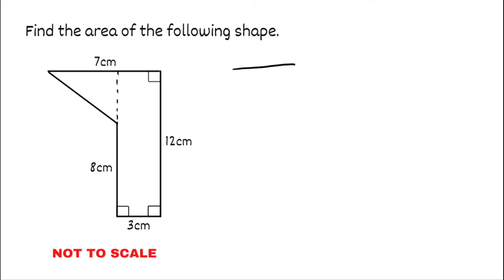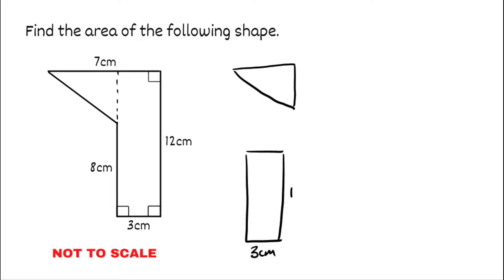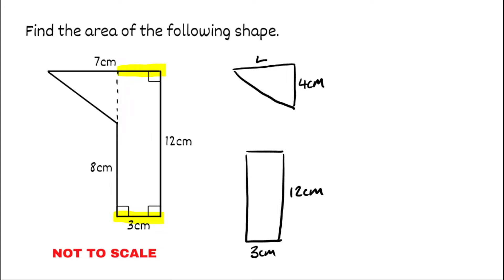Drawing them separately, I have the triangle and then the long rectangle. For the rectangle: the base is three centimeters and the height is twelve centimeters. For the triangle: since the rectangle is twelve centimeters tall, the whole left side is also twelve, so the triangle's height is the missing four centimeters — because eight plus four equals twelve. Similarly, the rectangle base is three, and if the entire top side is seven, the triangle's base is four centimeters.